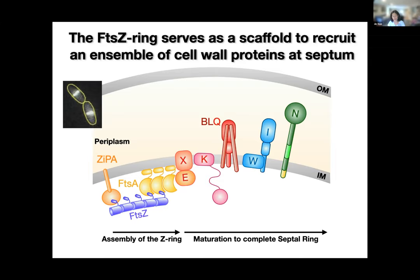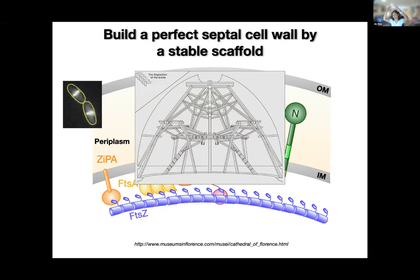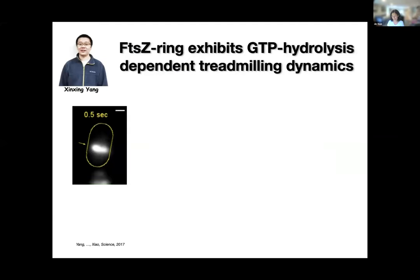Many of those divisome proteins are essential and many are also involved in cell wall synthesis and remodeling. FtsZ forms a scaffold and recruits enzymes and regulators to remodel the cell wall for successful cell wall constriction. But how does FtsZ do this? We know it's absolutely essential — without FtsZ, cells will never divide. You might intuitively think FtsZ builds a perfect static scaffold, like scaffolding for a cathedral dome, but recent studies including our own show that FtsZ directs cell division through a very dynamic mechanism.